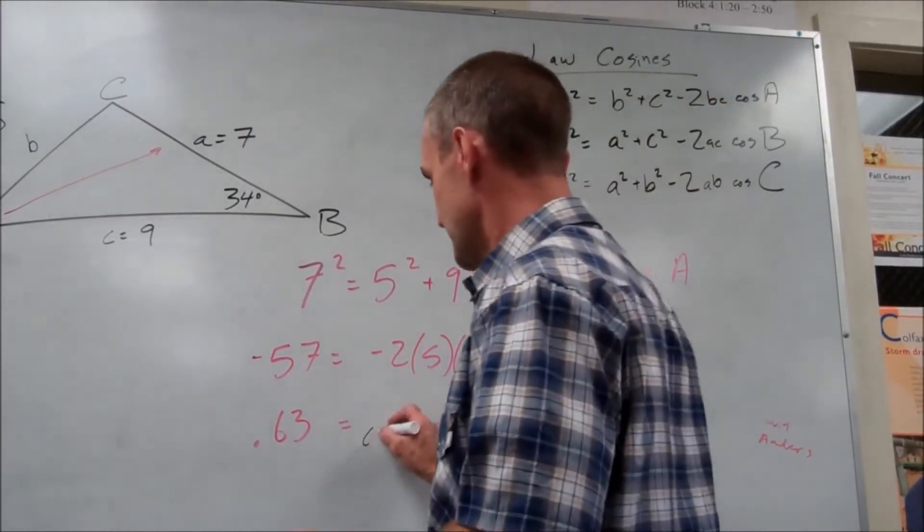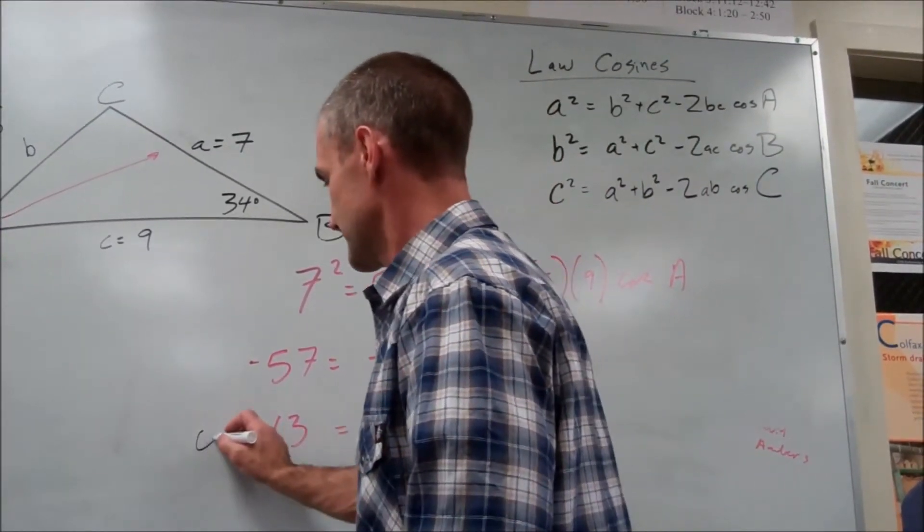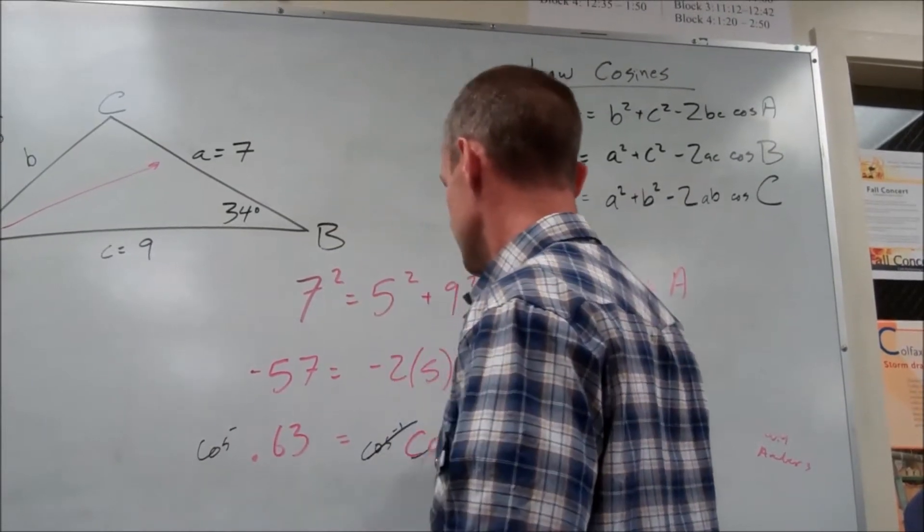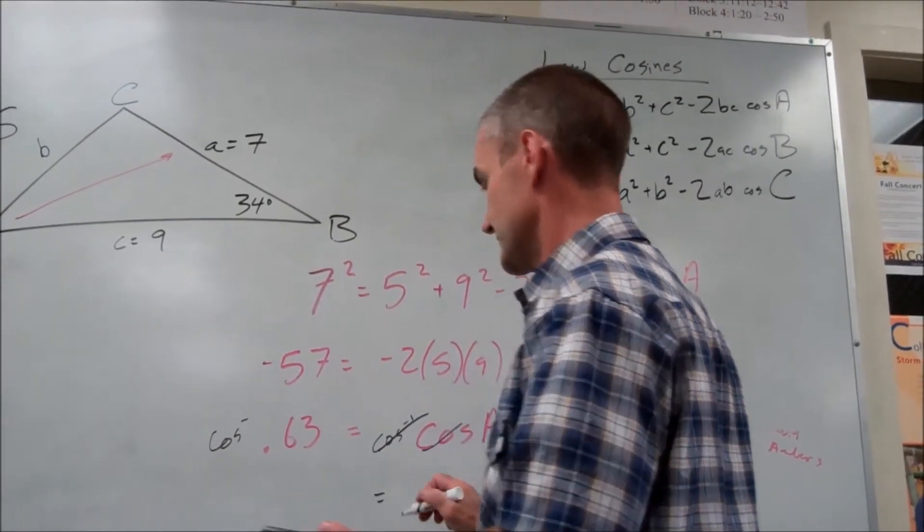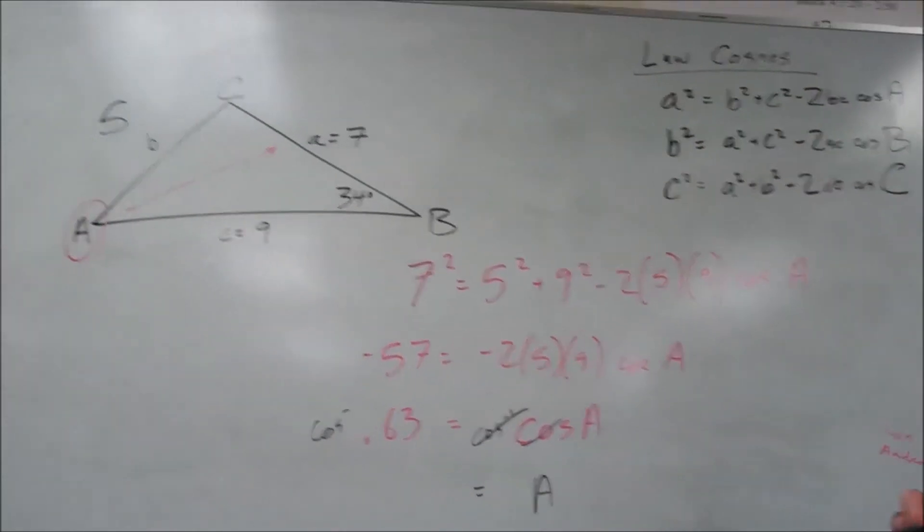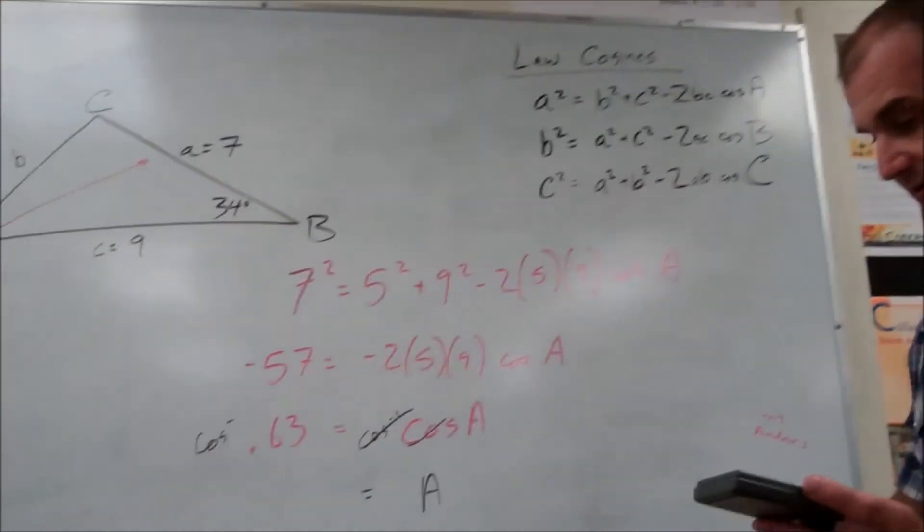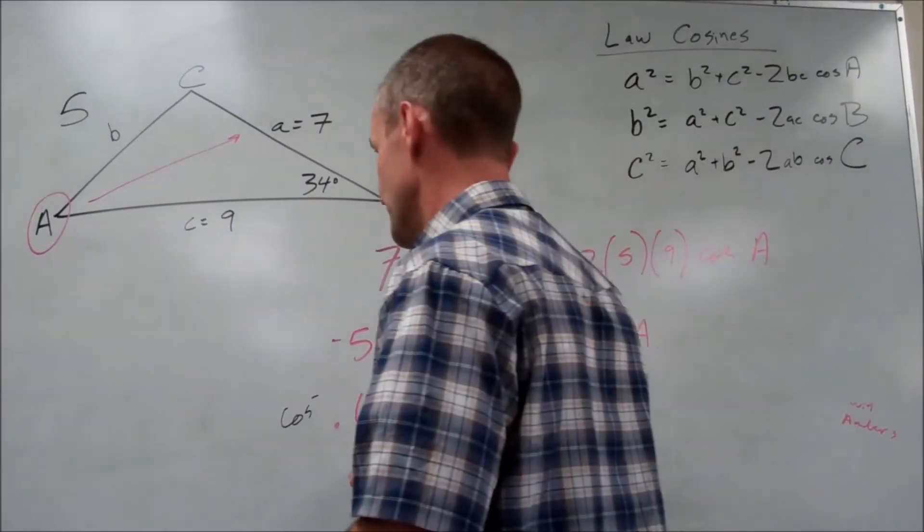Yeah, I take the inverse cosine of both sides. These cancel, A is equal to the inverse cosine of 0.63, 50.7 degrees.